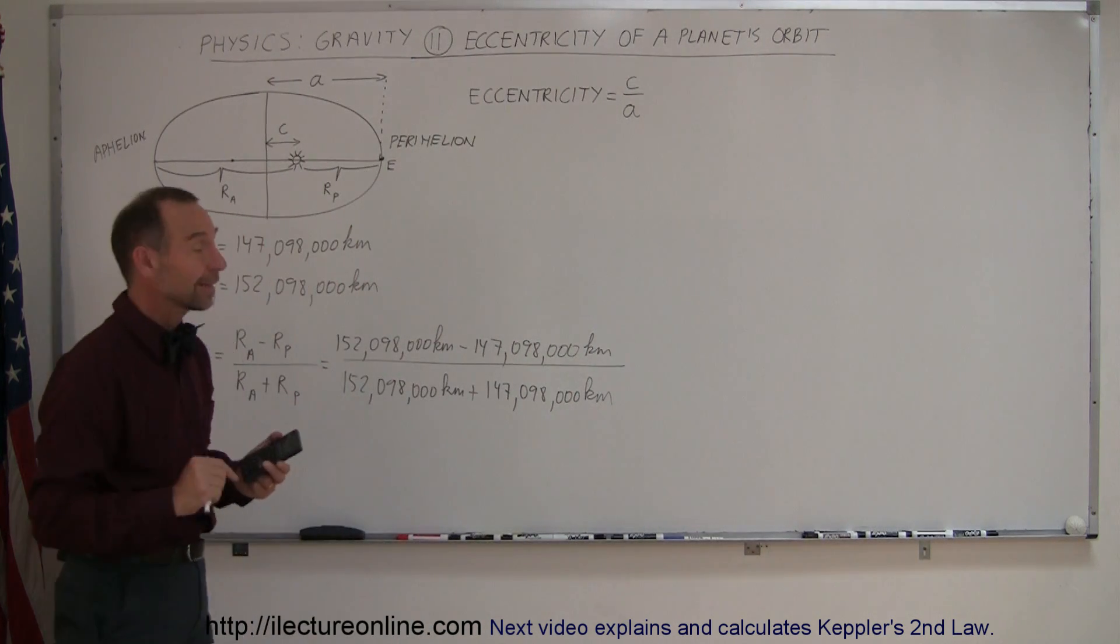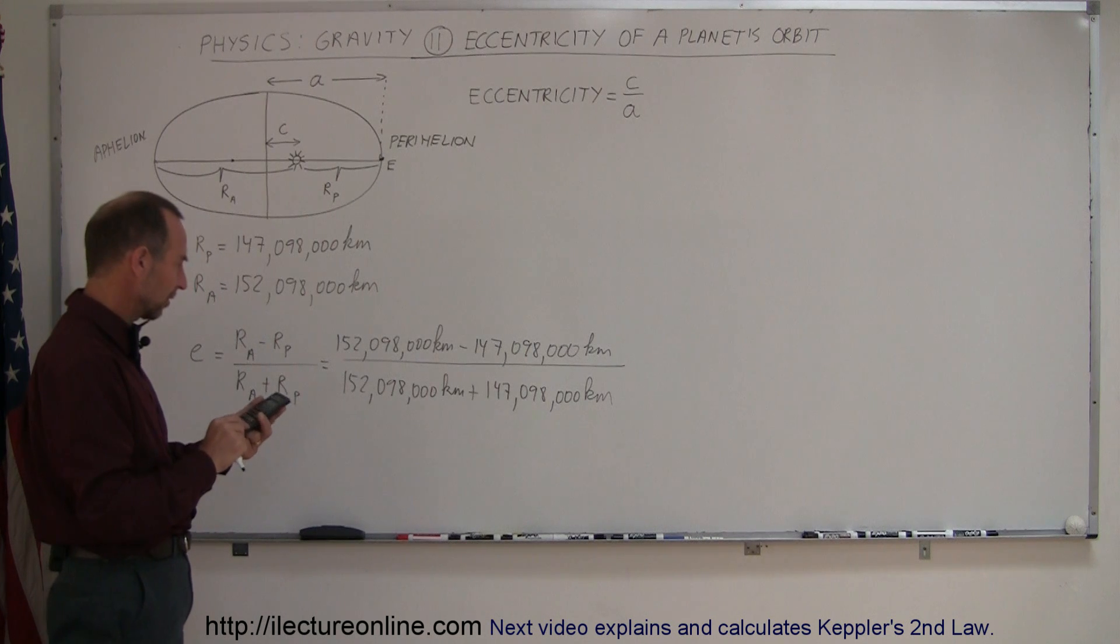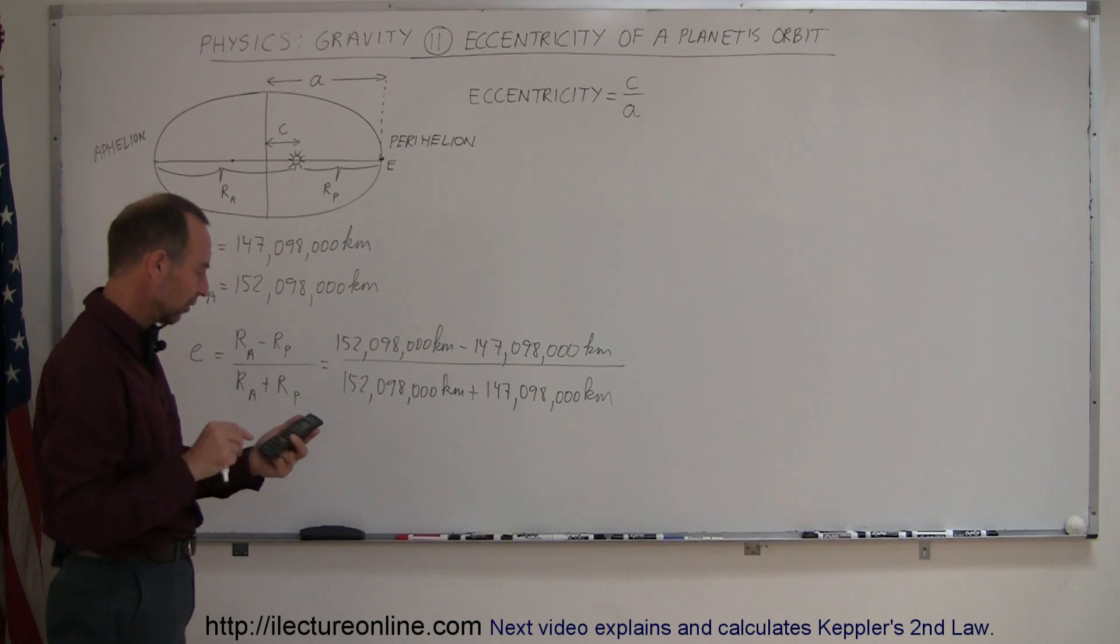And the whole thing divided by 152,098,000 kilometers plus 147,098,000 kilometers. When we work this out, we should get the eccentricity of the earth's orbit. That's exactly 5,000 divided by 152,098,000 plus 147,098,000, close parentheses, equals.